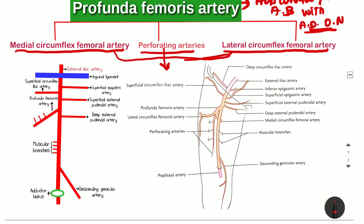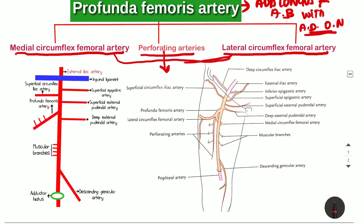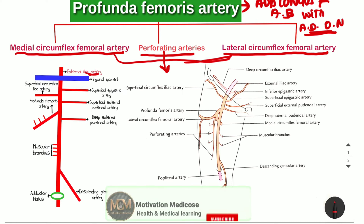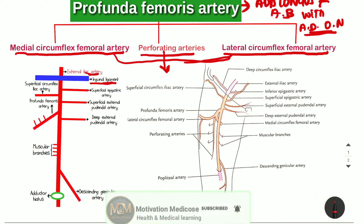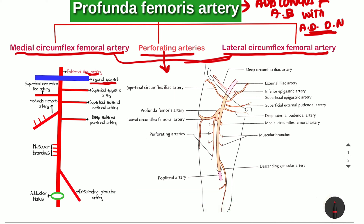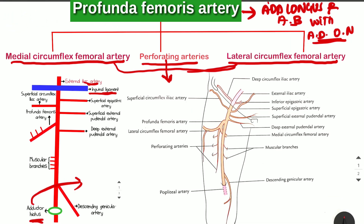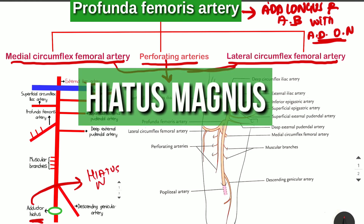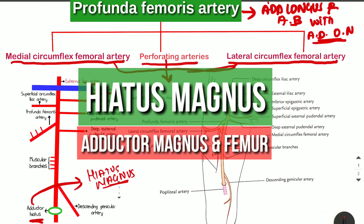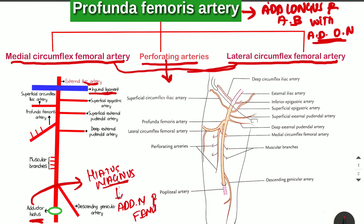Now let's look at the diagrams. In the first diagram you can see the external iliac artery piercing the inguinal ligament and becoming the femoral artery. At the distal end you can see the adductor hiatus — another name for this is the hiatus magnus, because of the presence of the adductor magnus muscle. This adductor hiatus is a gap between the adductor magnus muscle and the femur bone.